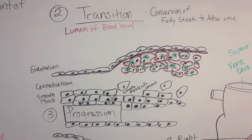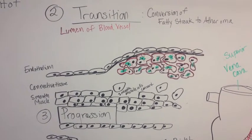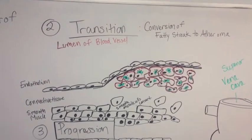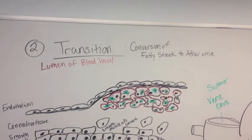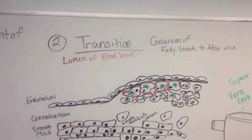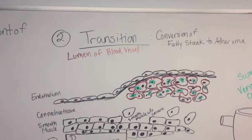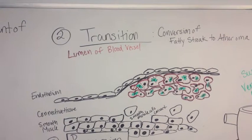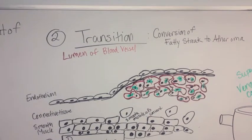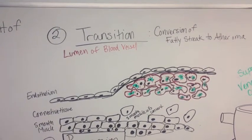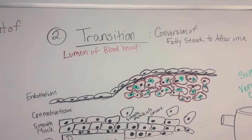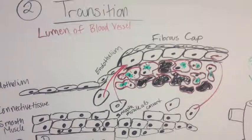Stage 2 of the conversion of a fatty streak to an atheroma is the transition stage. This stage begins as the macrophages, which have now become foam cells, migrate to the intima from the tunica media. They sit under the basement membrane.